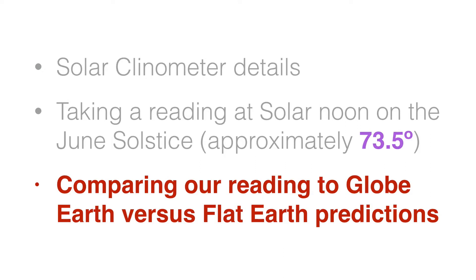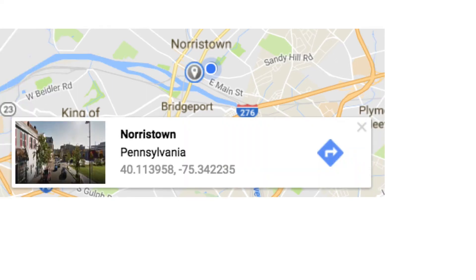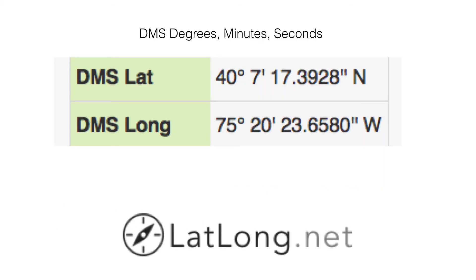Now we're going to compare our reading to the predictions based on the globe earth versus the flat earth. First thing I'm going to do is I'm going to find out my latitude. Now if you don't know your exact latitude, you can go into Google Maps and you can click on a location. So when you click, it actually places a little gray placeholder and at the bottom of the screen, it actually shows your latitude and longitude. So I'm going to say approximately 40.1 degrees north. Or you can actually use a website such as latlong.net. And they also show it in degrees, I'm sorry, in a decimal format.